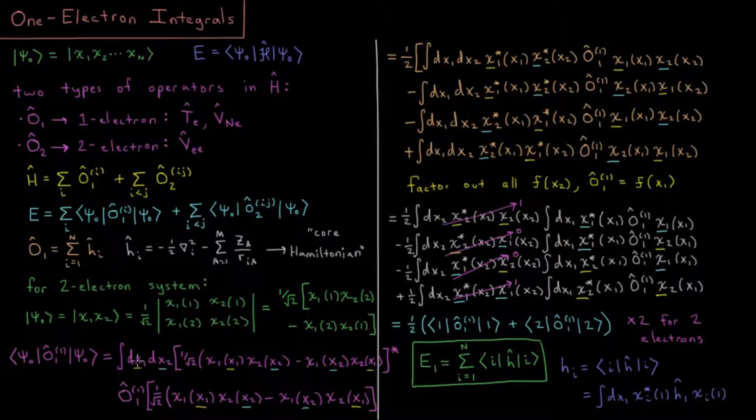Which in this case is all of the variables of both electrons, so x₁ and x₂, which we note is x, y, z, and spin for electron 1, x, y, z, and spin for electron 2.